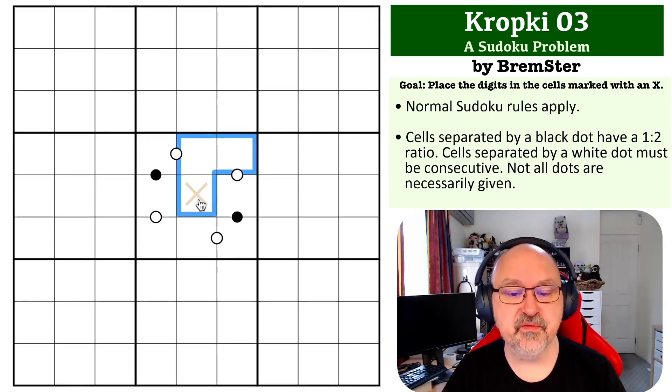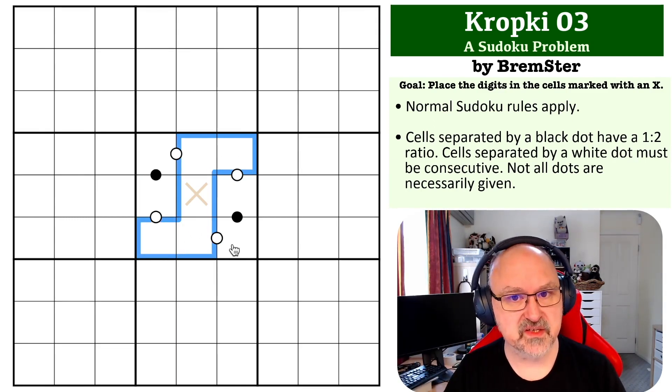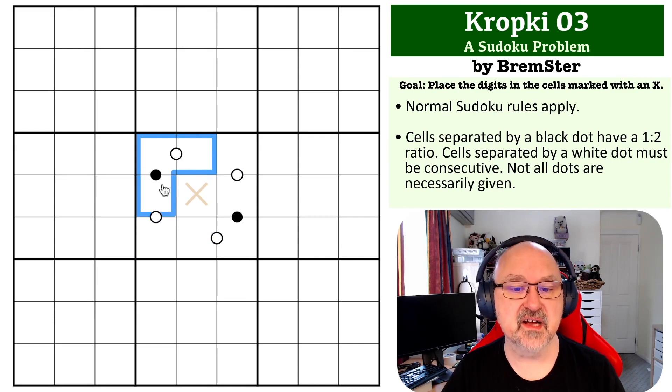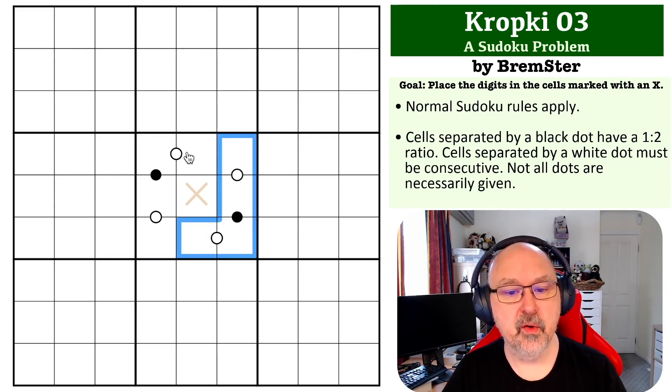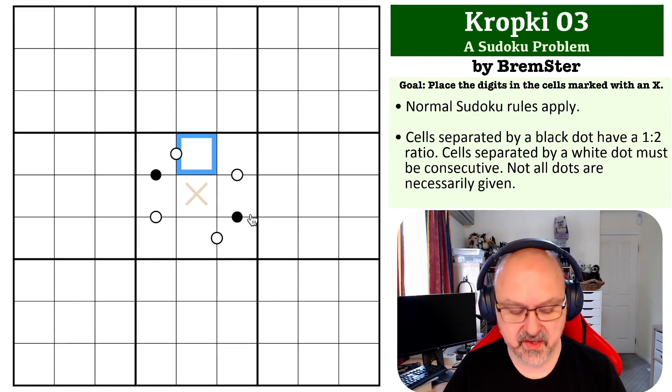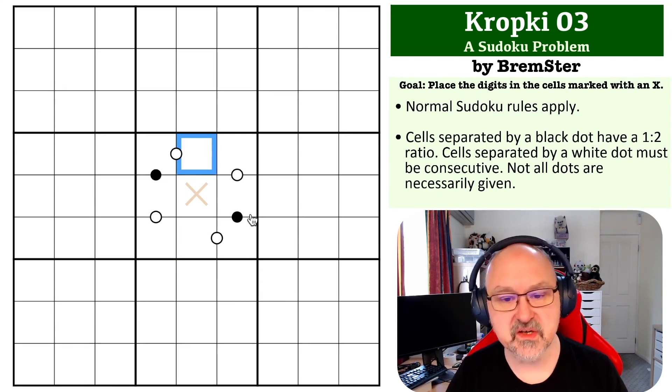So that leaves five places that you can put ones. However, if you think about these four positions, they are all effectively identical. They're at the start of a run of white consecutive dot, ratio dot, consecutive dot. So what happens if you start one of these with a one? Now, you can do this in your head, but I'm going to demonstrate it on the grid because I'm trying to explain how this works.